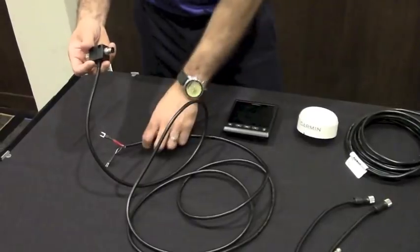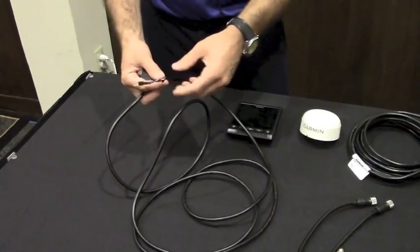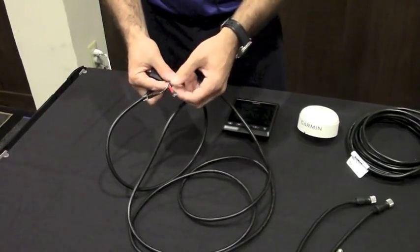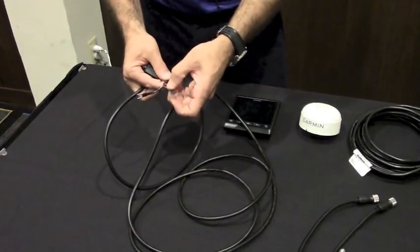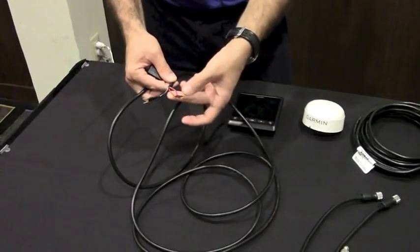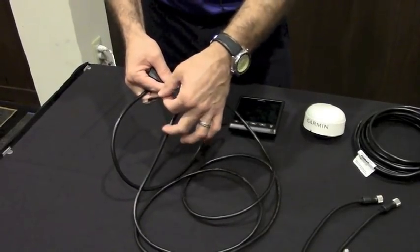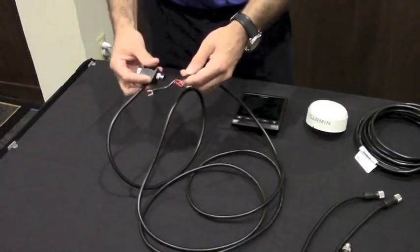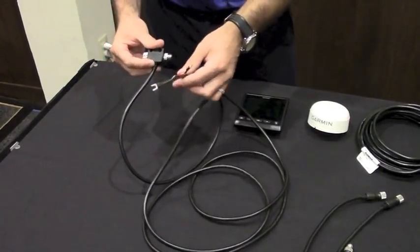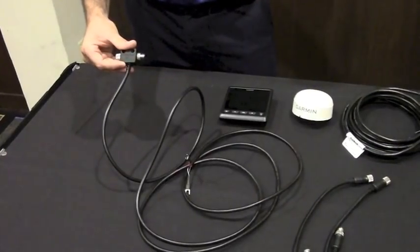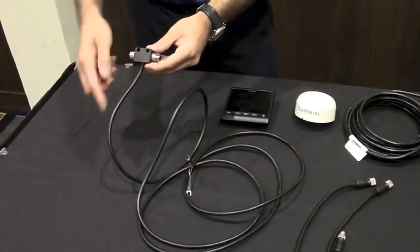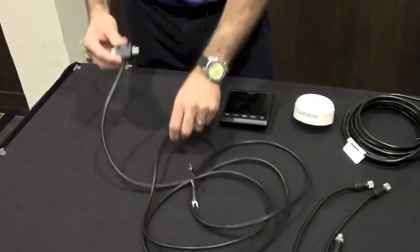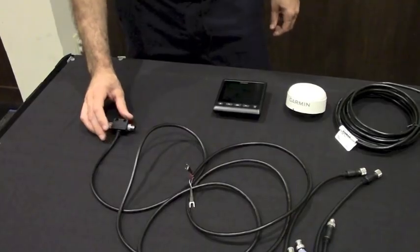The power tee is sort of where it all starts. And notice on this one you have pretty simple black and red wiring. The important thing to note is that there are two red wires on here positive and two black wires on here negative. The way it's set up is that power will travel down this way on the network and power will travel down that way on the network. So the power tee is very important.